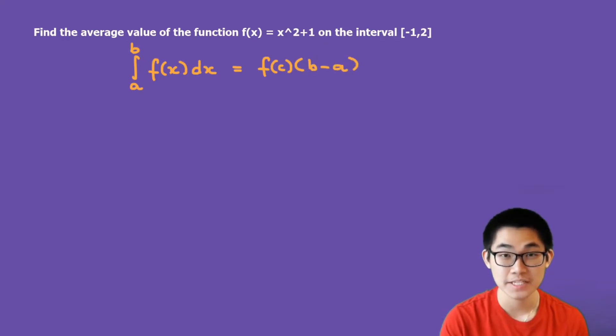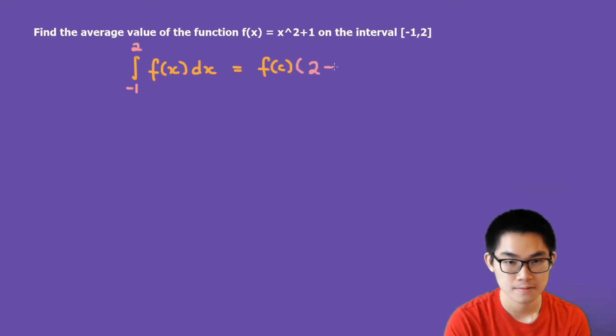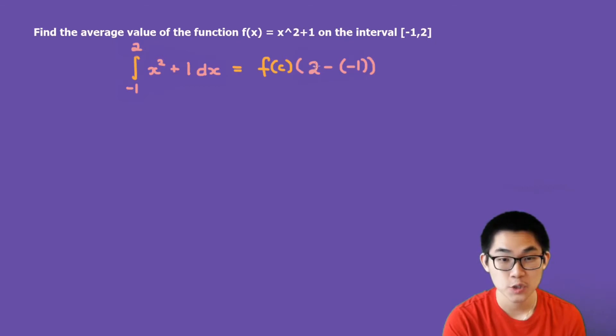The second thing I'm going to do is find a and b. So the interval from here to here means that a is negative 1 and b is 2. So let's go ahead and fix that. And we do the same thing over here. So b is 2 and a is negative 1. We know that f of x is x squared plus 1, so we can replace it into our integral. And over here, 2 minus negative 1 is 3.